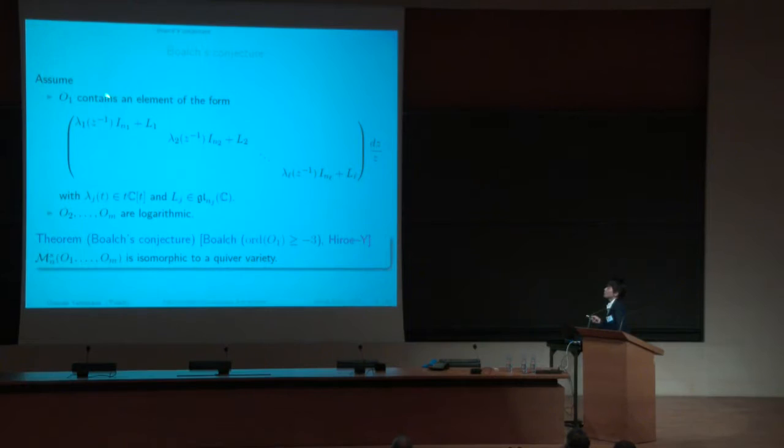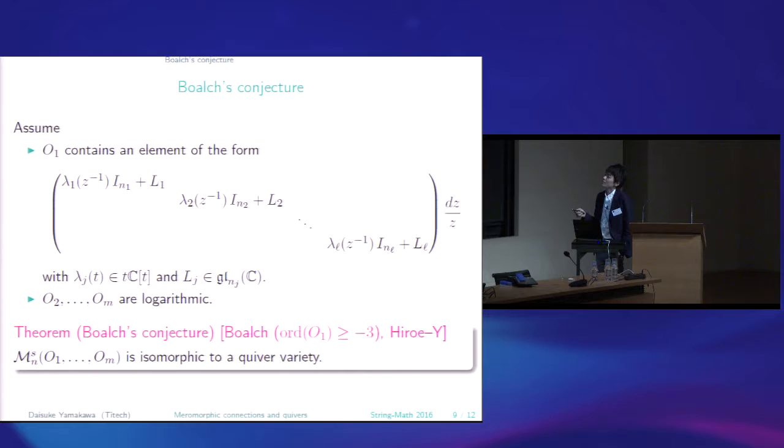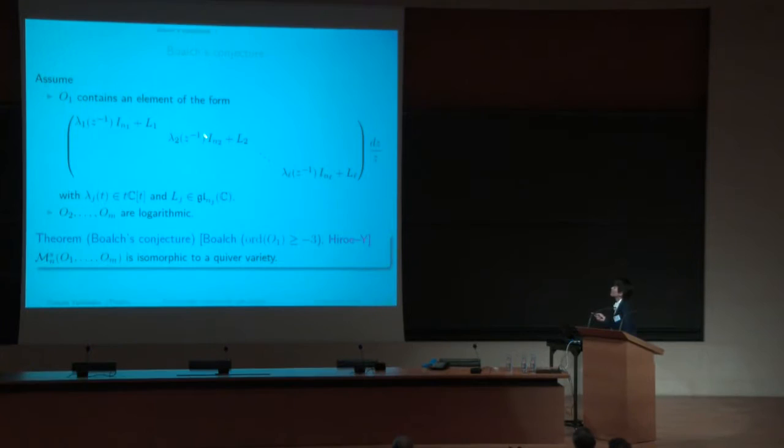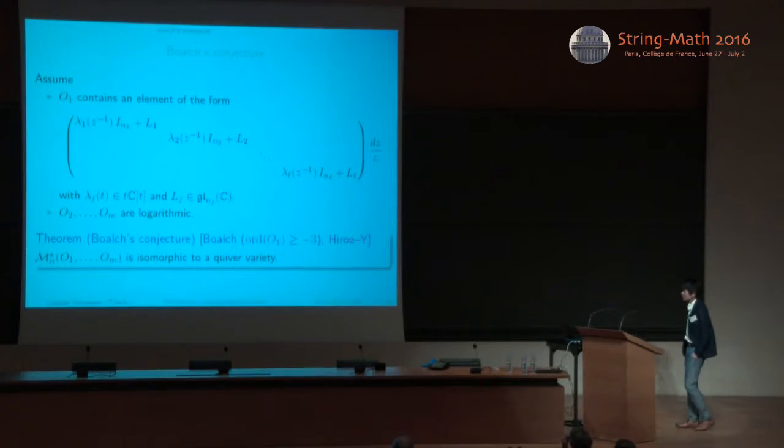So for polar part manifolds Boalch conjectured the following. So let us assume the following two conditions. First, the orbit O1 contains such a block diagonal matrix. So in each diagonal block, we have the residue-free part and the residue part. So the condition is that the residue-free part is given by scalar polynomial in the inverse. So in some sense, this condition is not so strong. But the second condition, second assumption is very strong. So the other orbits are logarithmic. So just adjoint orbit of GLN.